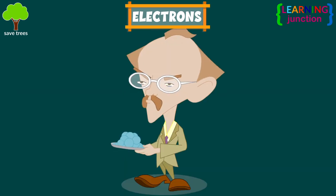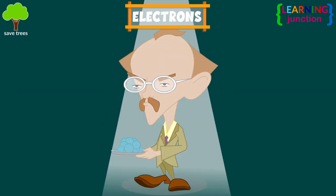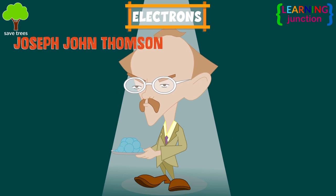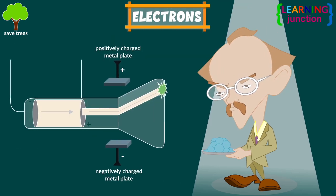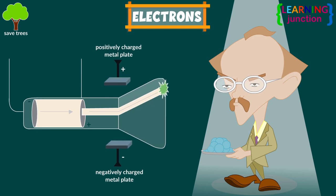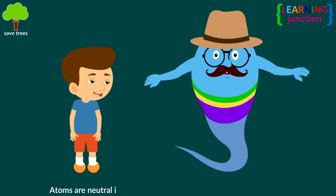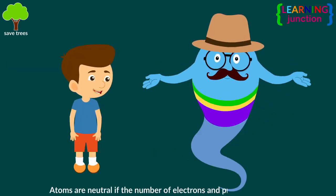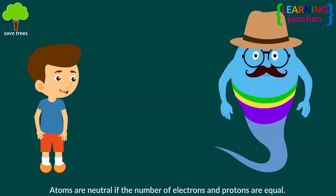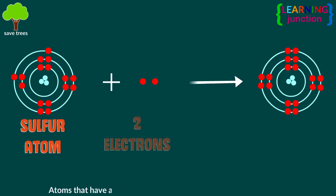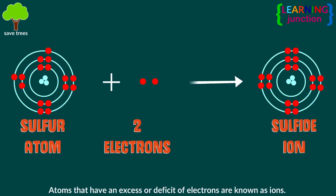Electrons were discovered by a British physicist, Joseph John Thompson, in 1897, when he was studying the properties of cathode rays. Atoms are neutral if the number of electrons and protons are equal. Atoms that have an excess or deficit of electrons are known as ions.